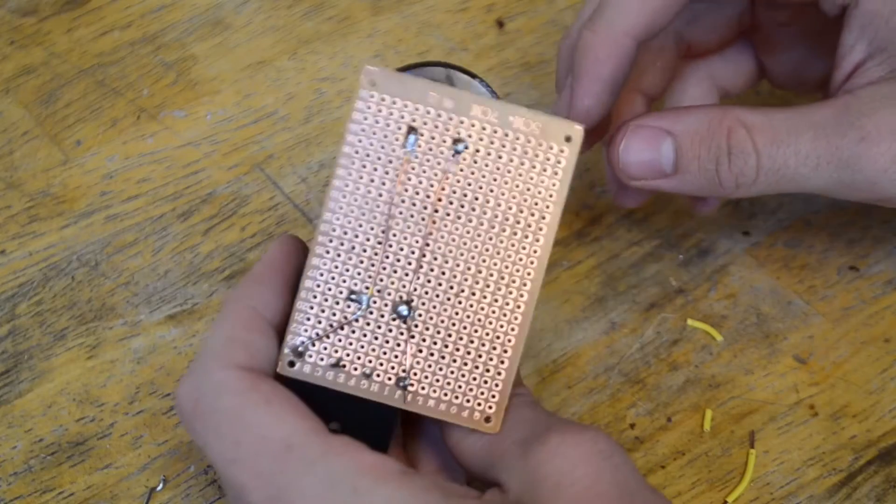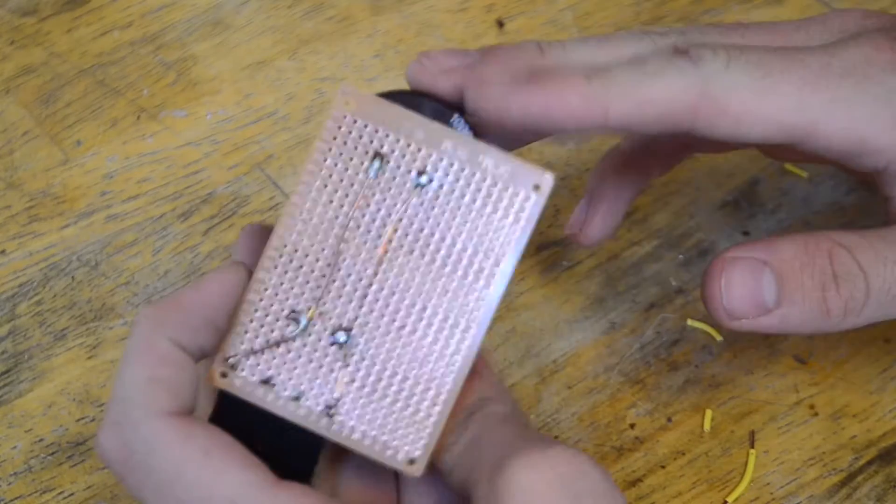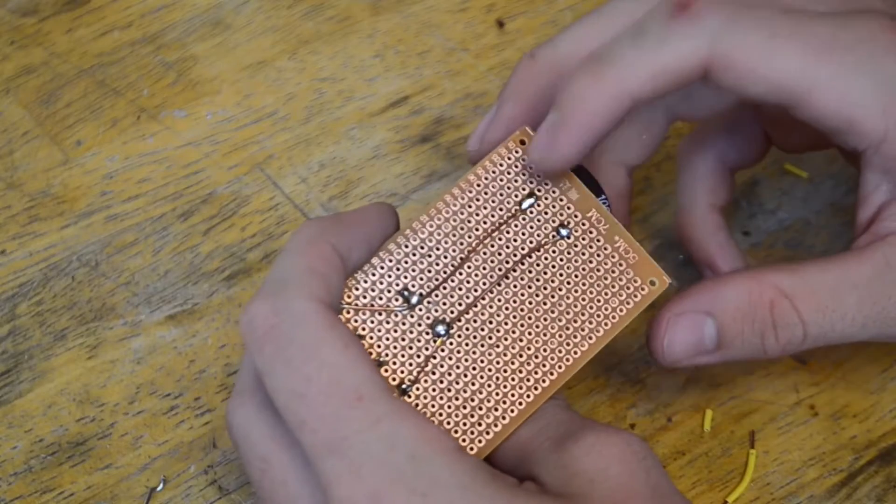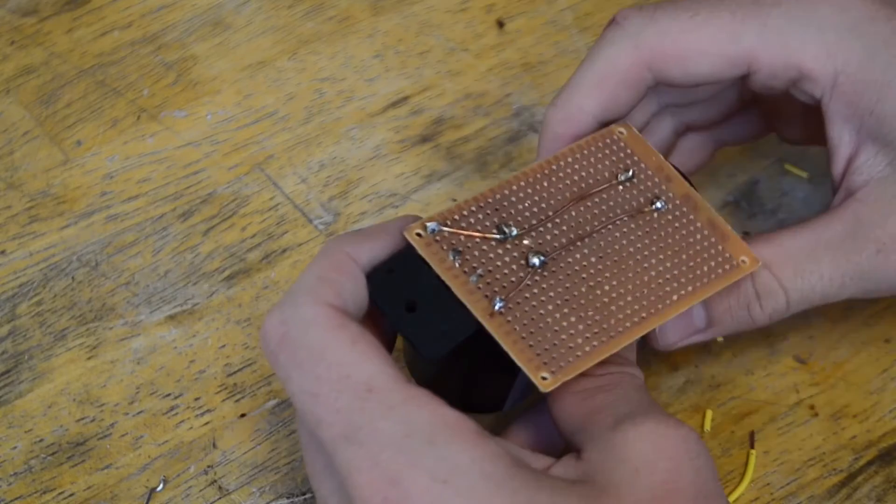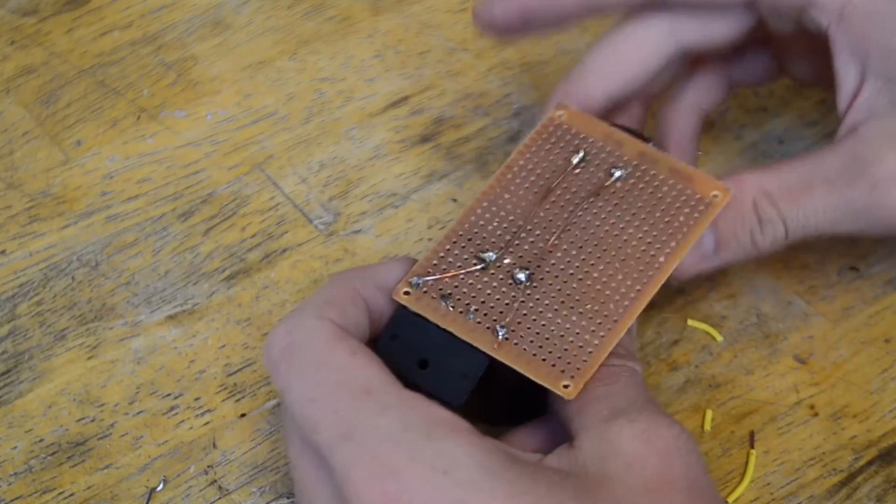Alright, so now that we've got those points soldered up, there's only two more things we need to do. One, solder a positive and negative output wire to the end of this capacitor down here. And two, solder wires to these for the input to the AC. So let's go ahead and do that.